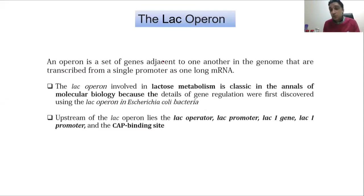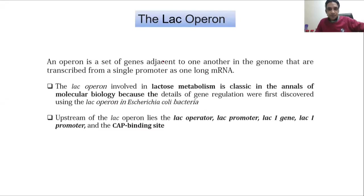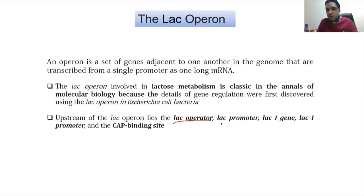The most famous example of bacterial gene regulation is the lac operon. An operon is a collection of genes. The lac operon is involved in lactose metabolism. Upstream of the lac operon there lies a lac operator — if there is an operator, something is supposed to bind there to regulate the gene. Then there is a lac promoter, which binds RNA polymerase and transcribes the genes. 'Upstream' means everything present before the transcription start site.